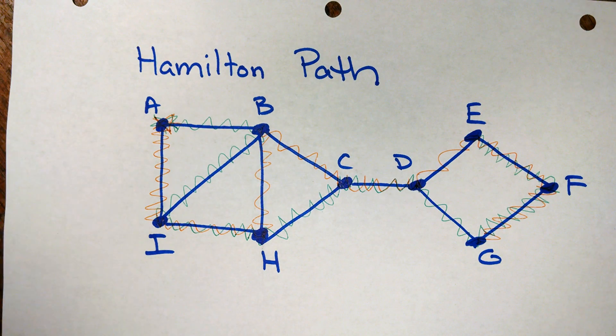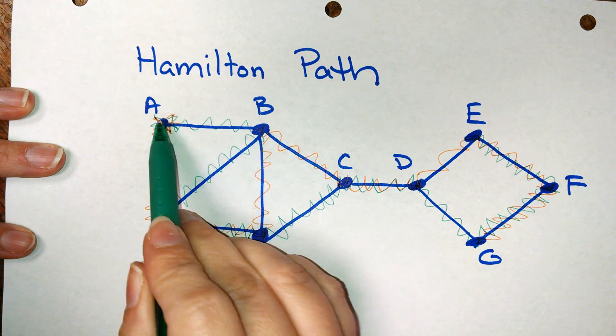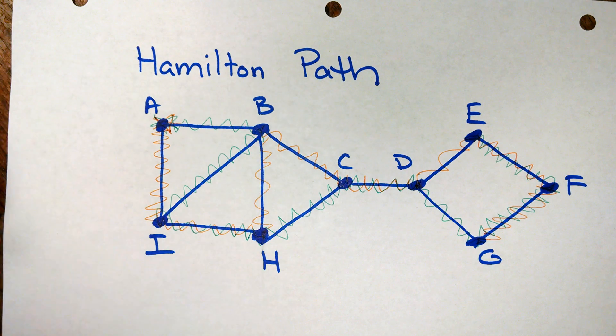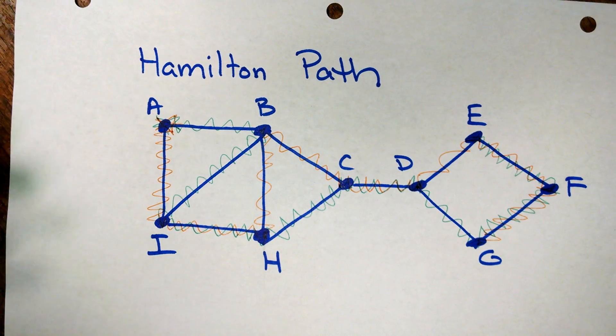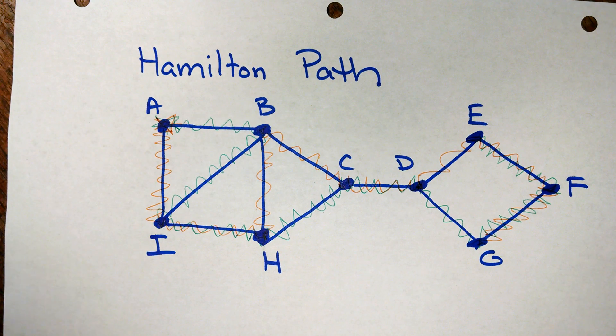Looking like a little bit of a mess at this point. But I managed to go through every single one of the vertices once and only once without even worrying about which edges I was using. All I care is that for a Hamilton path, I go through each vertex once and only once. And that's all there is to a Hamilton path.